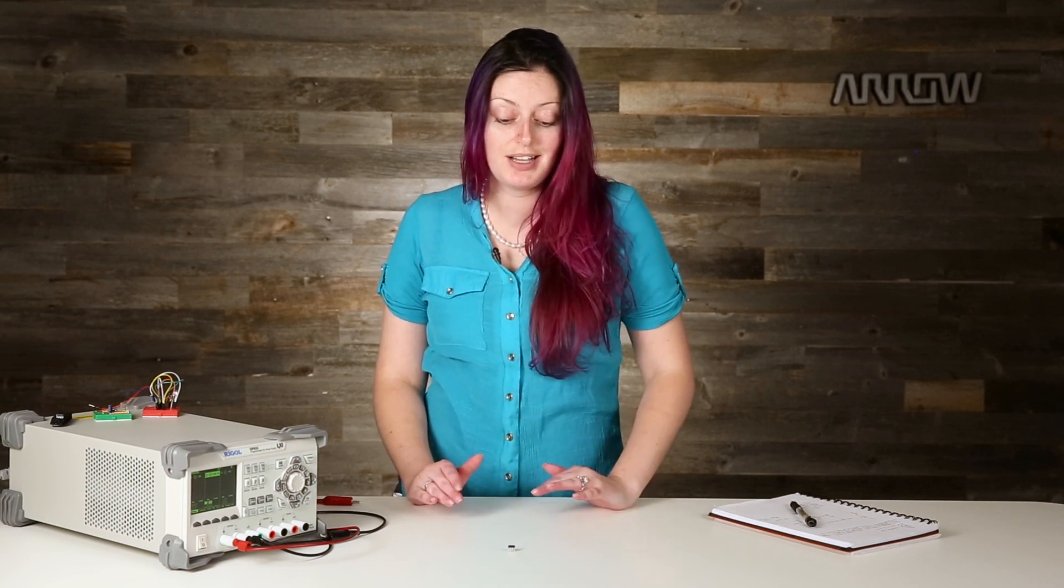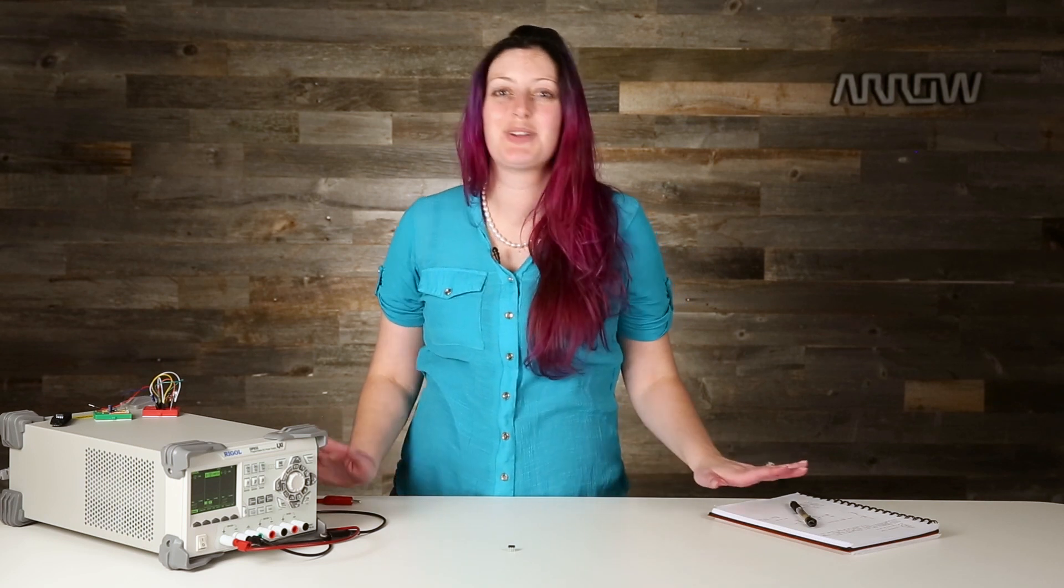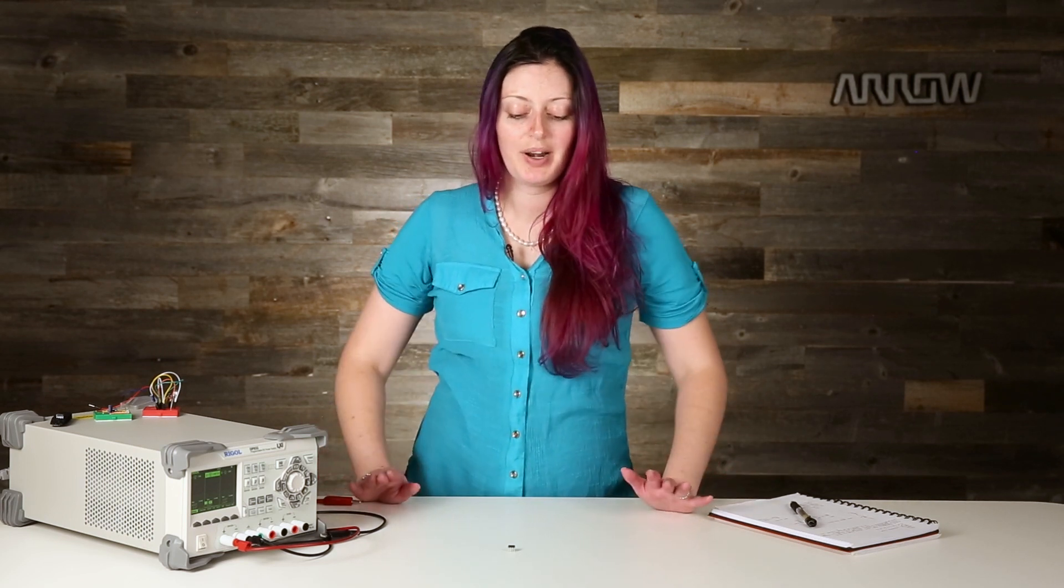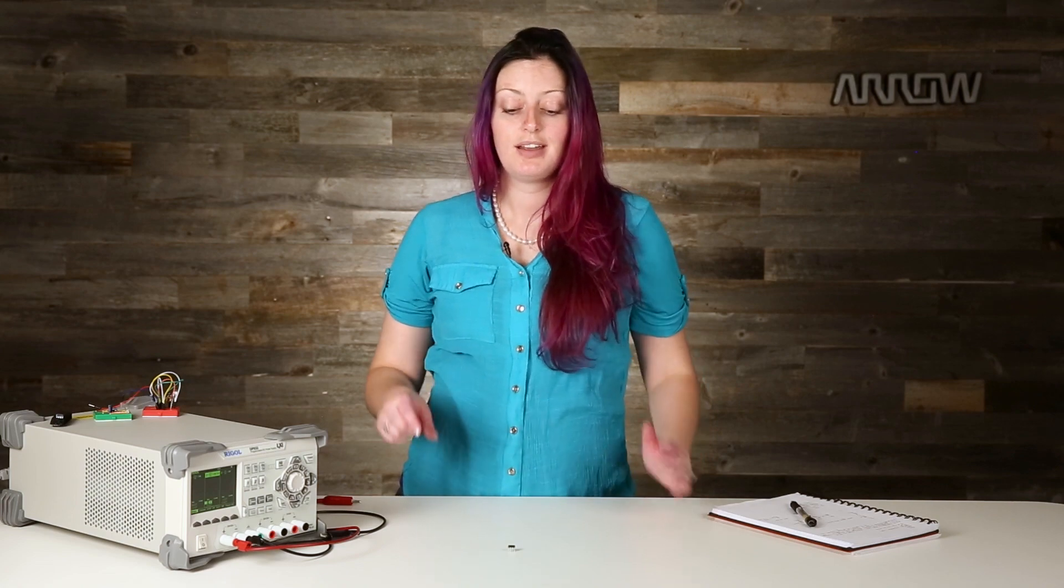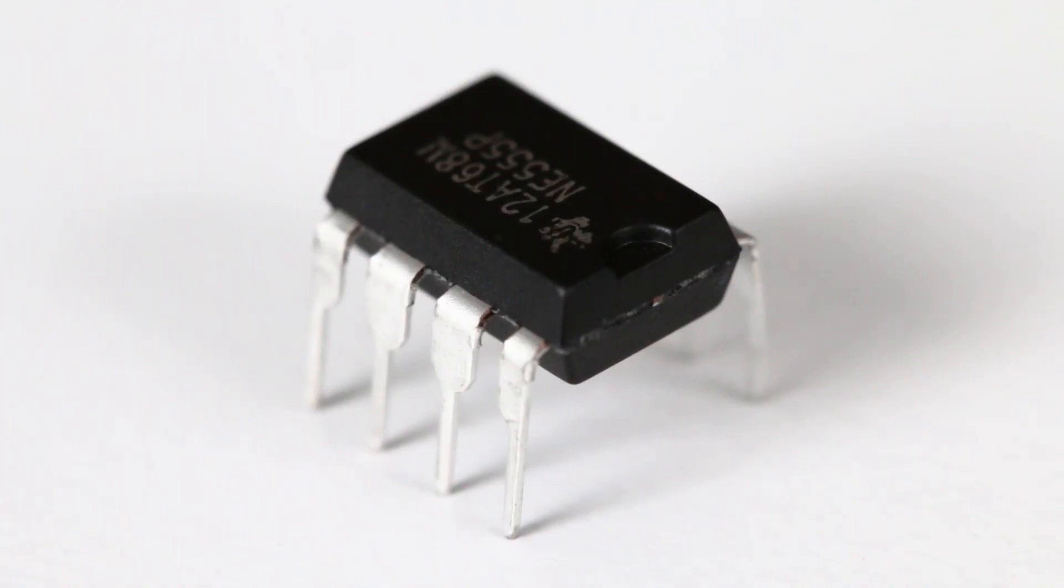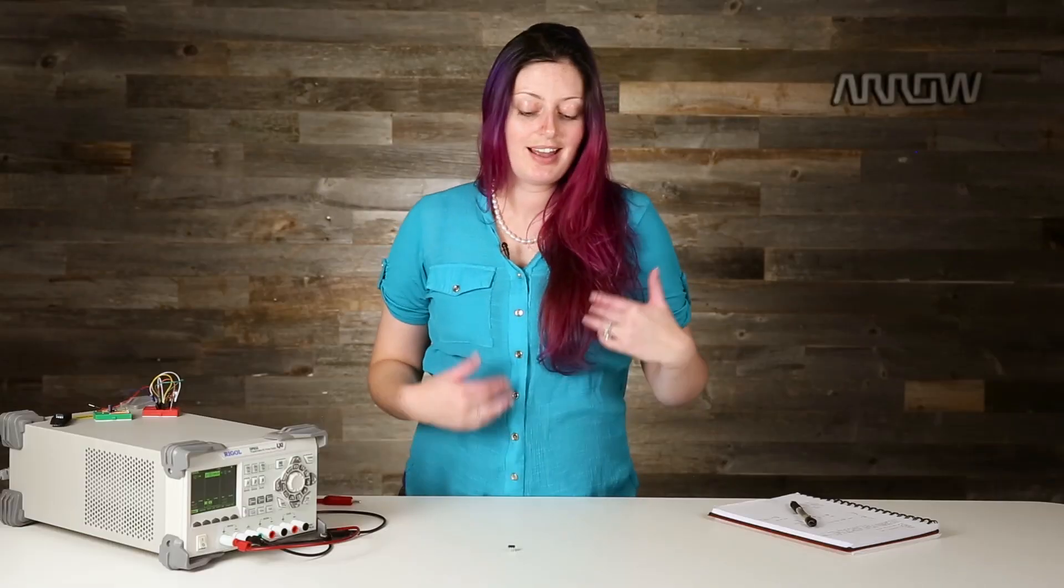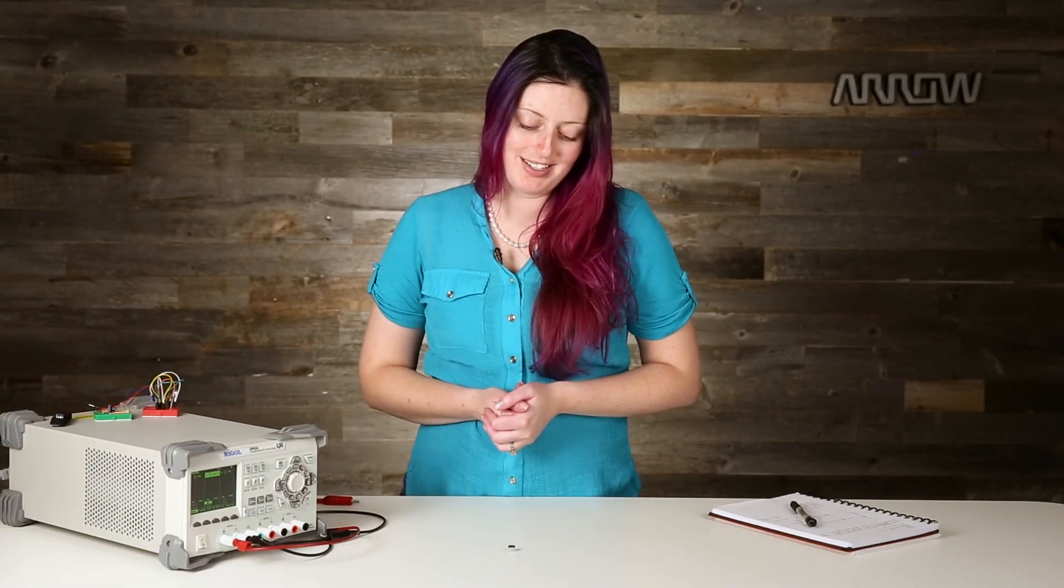The most useful one in my opinion and we're going to be talking about today is called astable operation. It involves nothing from the user. There's no input trigger here. What happens is based on how you set up two resistors and one capacitor, it will start creating a rectangular wave or square wave if you do the numbers right without any user operation. So you don't need to do anything, there's no input, it just starts generating a wave for you.